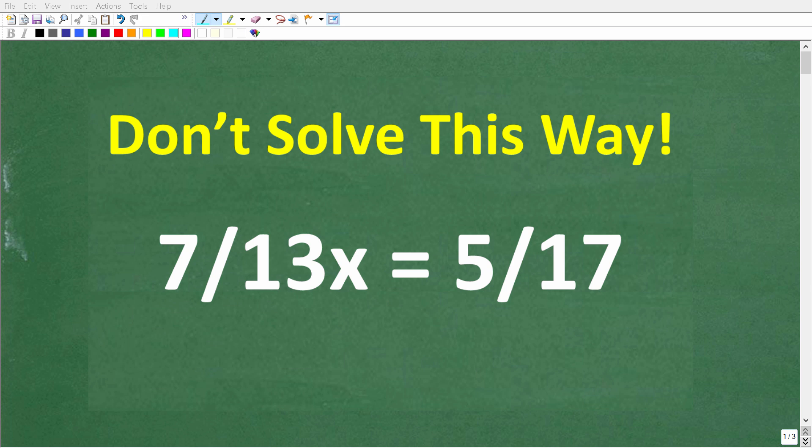Okay, so let's talk about the best and worst way to solve this algebra equation. We have 7 over 13x is equal to 5 over 17. Feel free to use a calculator, but I want to encourage you to not use a calculator. But if you want to use one, go ahead and do so. If you think you know the answer, put that into the comment section.